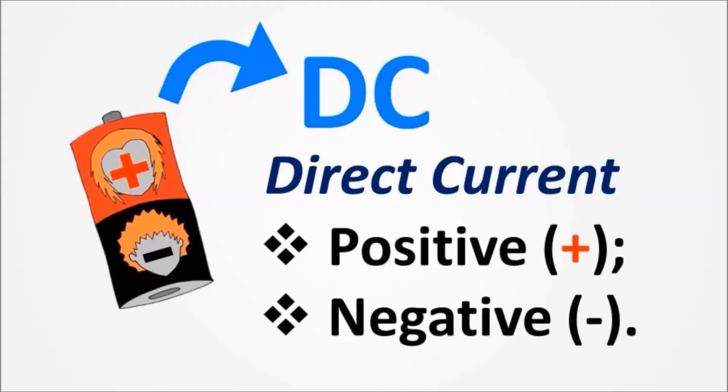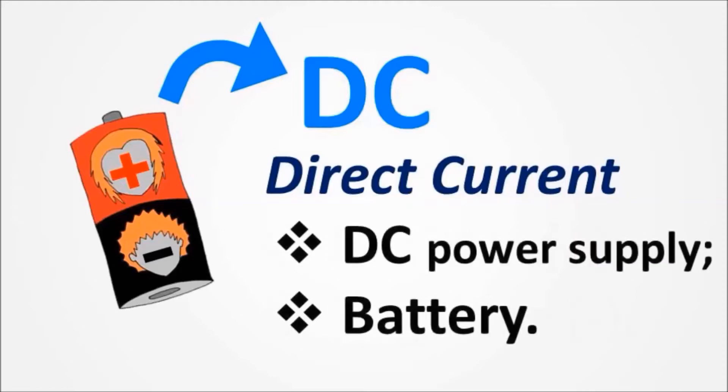As examples, we can have direct current devices such as DC power supply and battery, like the battery in your remote control or cell phone.